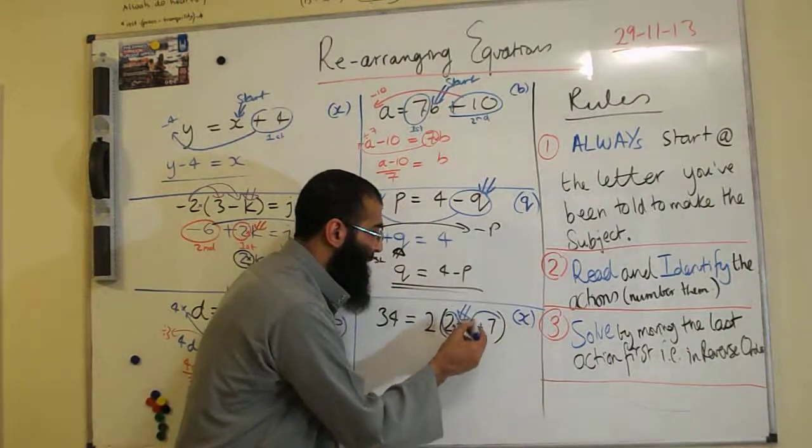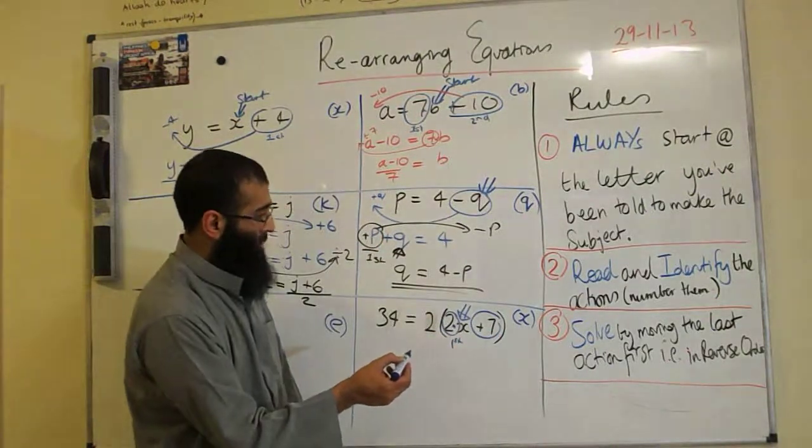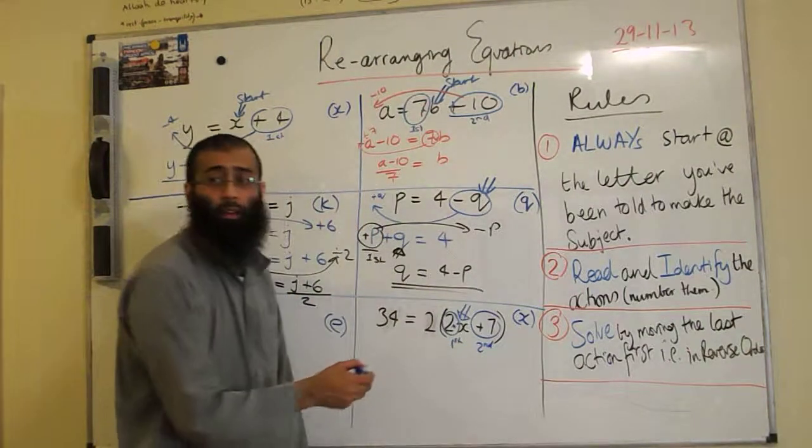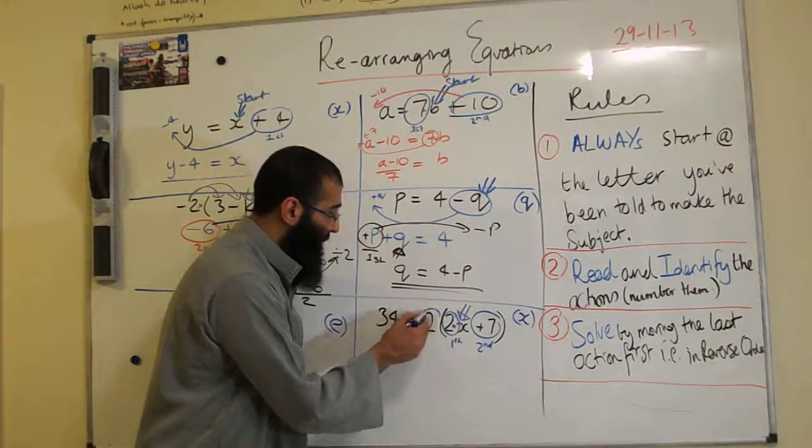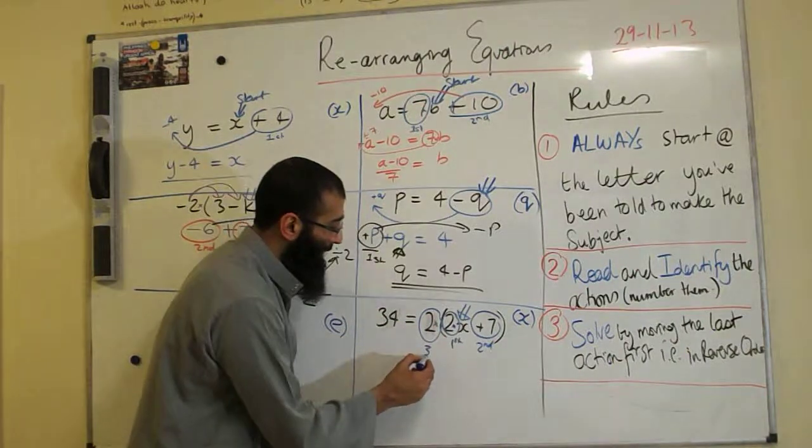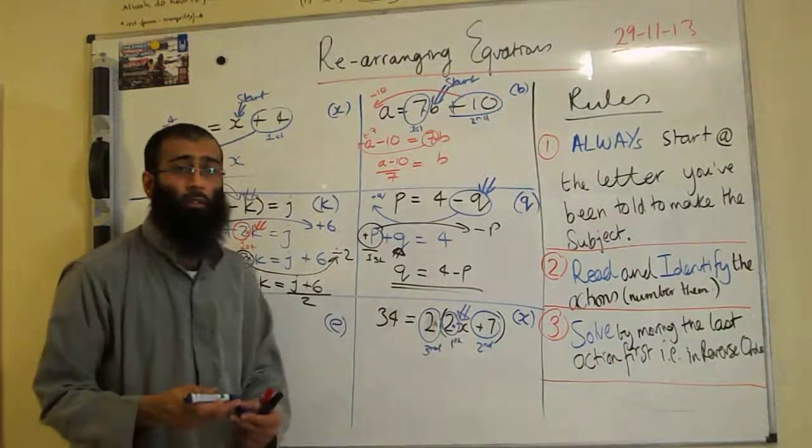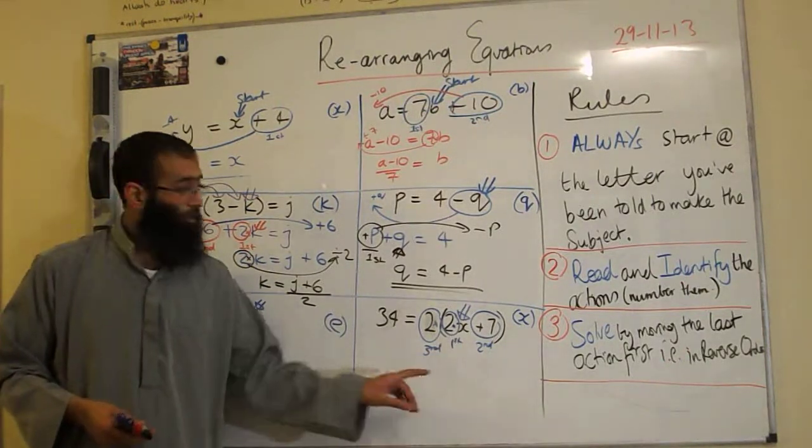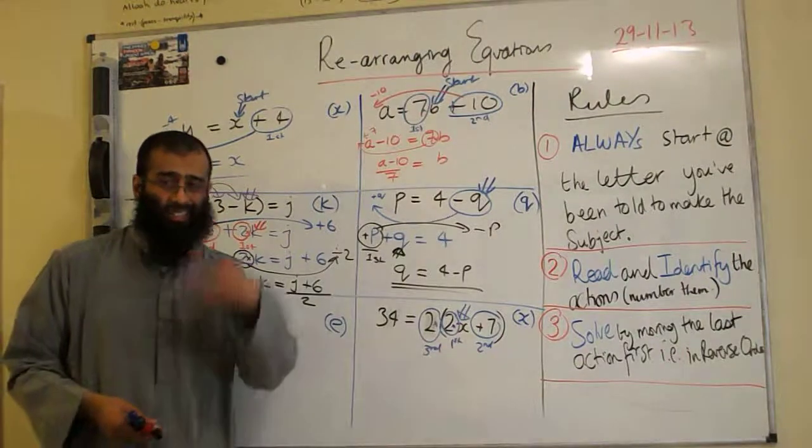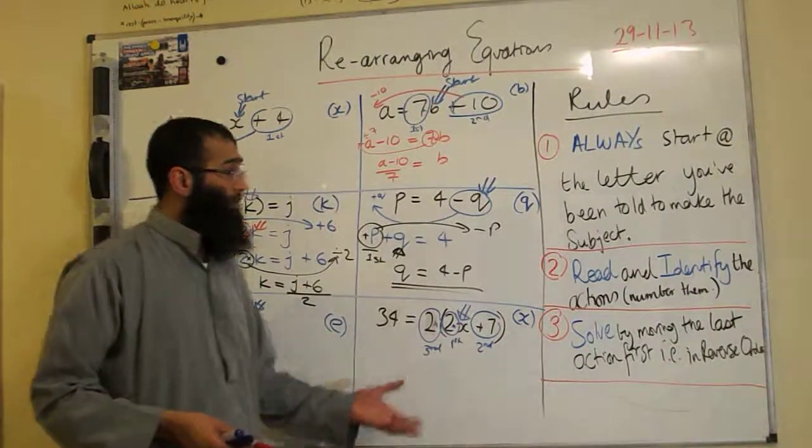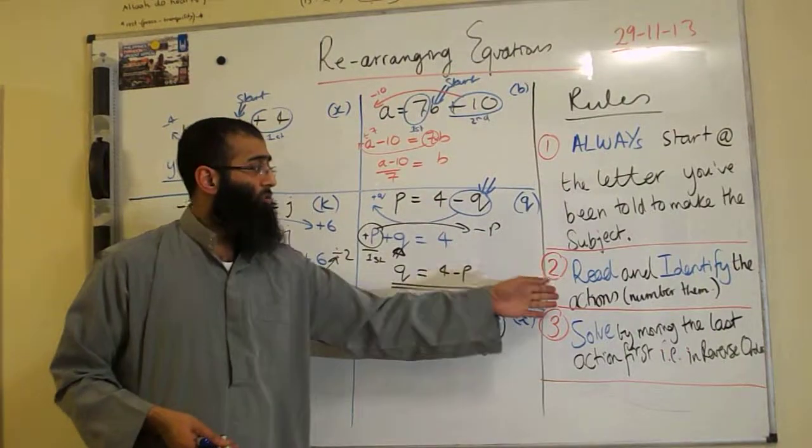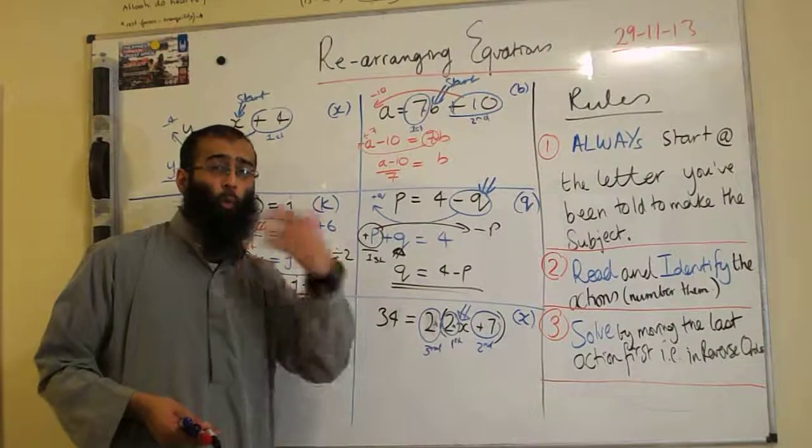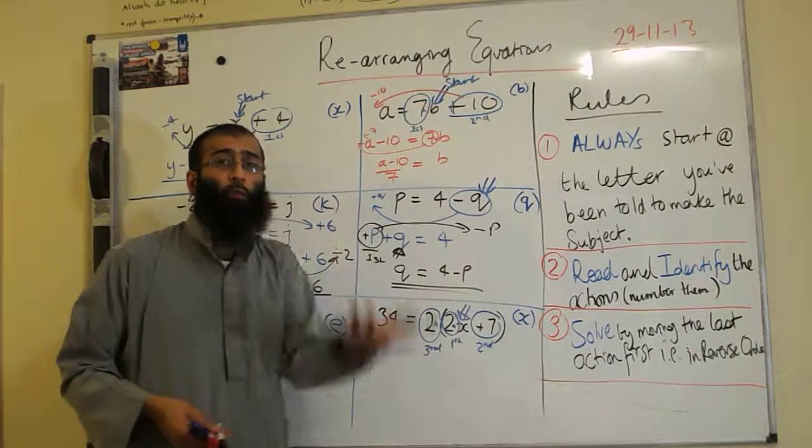We have X. It's been first of all timed by 2, which is called the first action. Next, Hamza, the next thing to be done to it has been added by seven, which will give us the second action. And then Saf, the last thing to be done to it has been time by 2, which is called the third action. So in this particular question, we've got three steps. This is the crux of these type of questions. You must always start with the letter. You must identify and number the actions. And then solve by moving the opposite action. So you'll always get the order right.